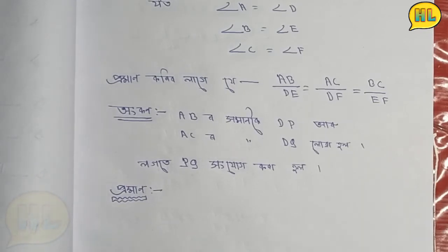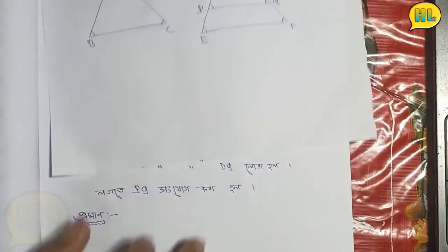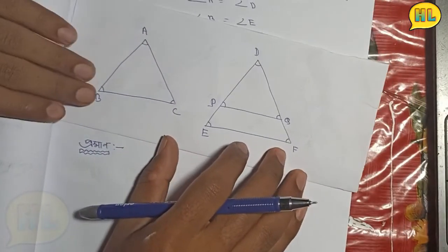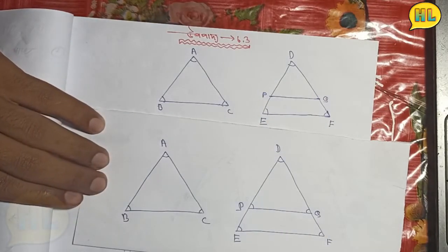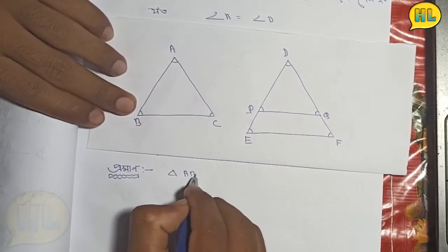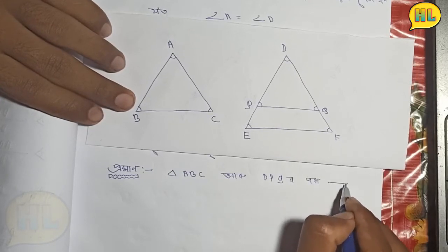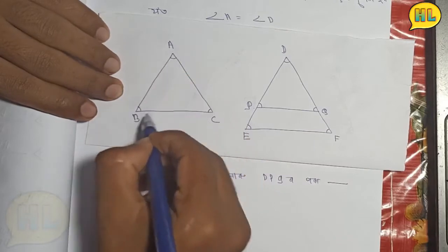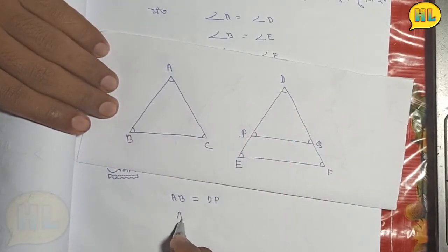A B C R O D P Q. So one of the three groups is not in the same way. Three groups A B C R O D P Q. All right, what do you think about A B C R O D P Q?